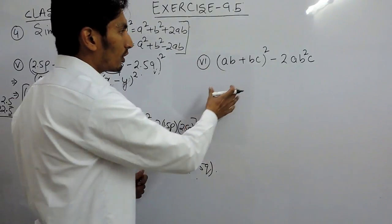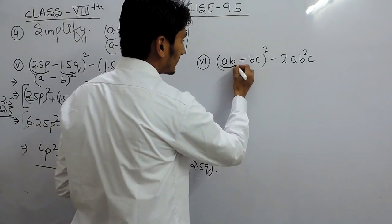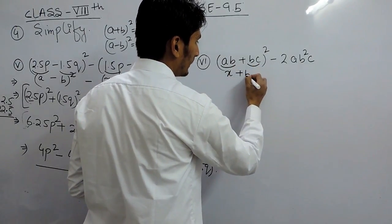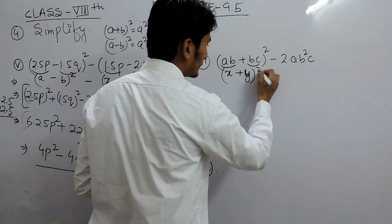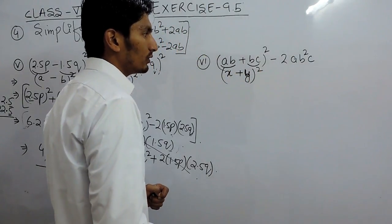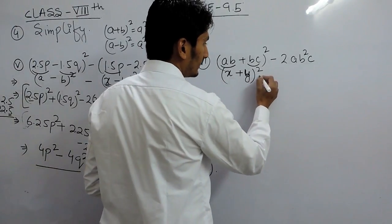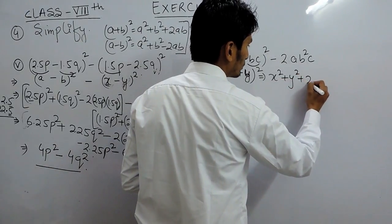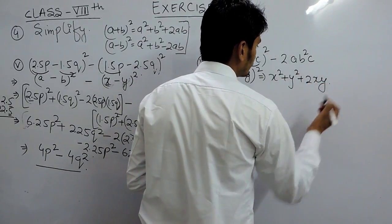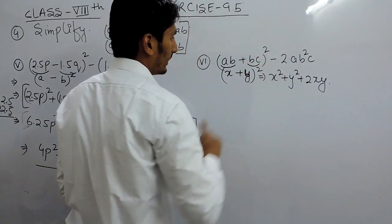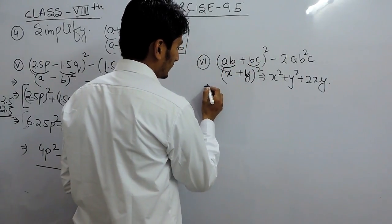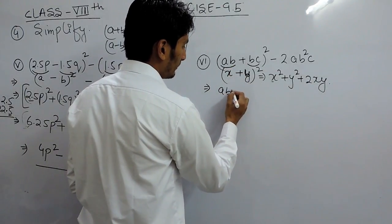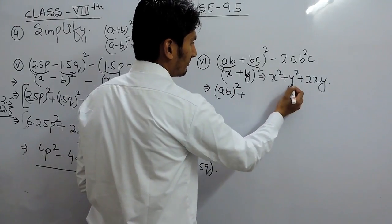Similarly, for the next part — if I consider this complete value as 'a' and this complete value as 'b', this is basically (a + b)² or (x + y)². The formula for this is x² + y² + 2xy. So I can expand this using this formula. This is x, so this is x² which is (ab)².